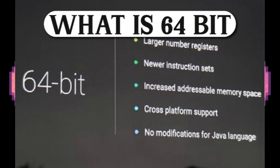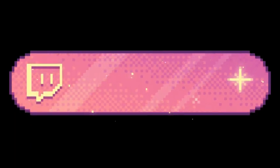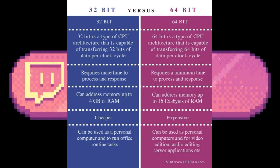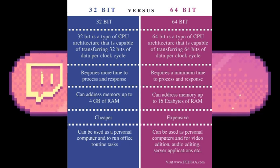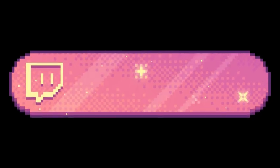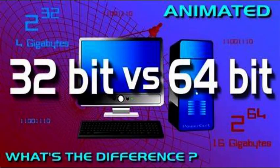A 32-bit system can access 2^32 different memory addresses, i.e. 4GB of RAM or physical memory. Ideally, it can access more than 4GB of RAM also. A 64-bit system can access 2^64 different memory addresses, i.e. actually 18 quintillion bytes of RAM.